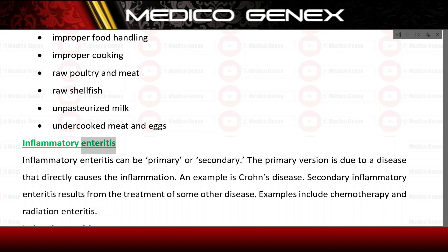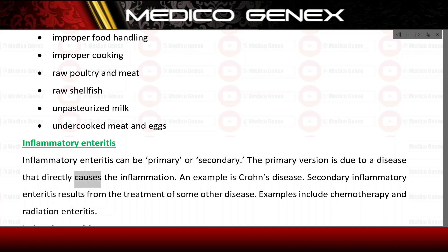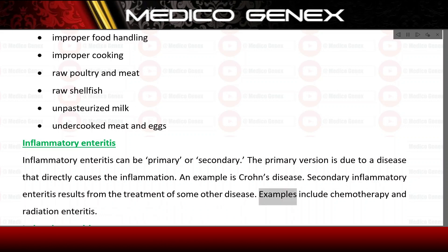Inflammatory enteritis can be primary or secondary. The primary version is due to a disease that directly causes the inflammation — an example is Crohn's disease. Secondary inflammatory enteritis results from the treatment of some other disease; examples include chemotherapy and radiation enteritis.